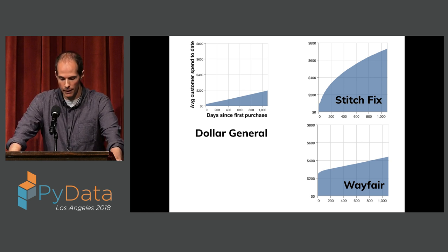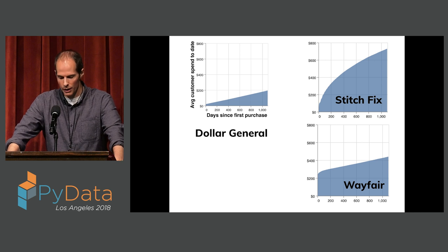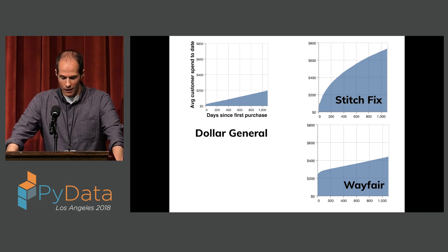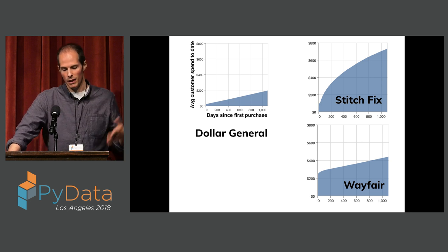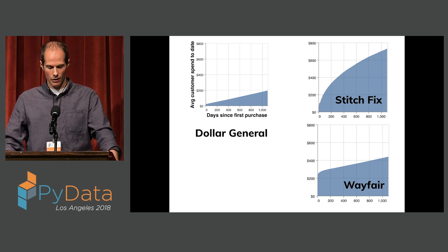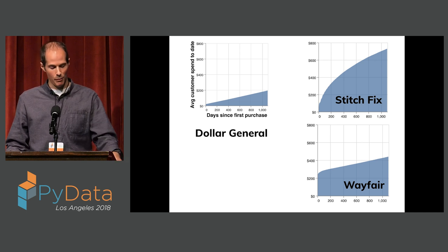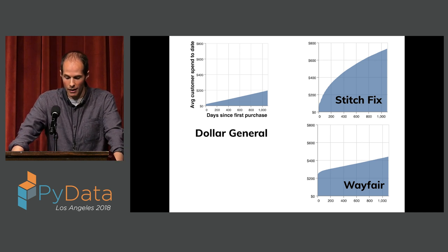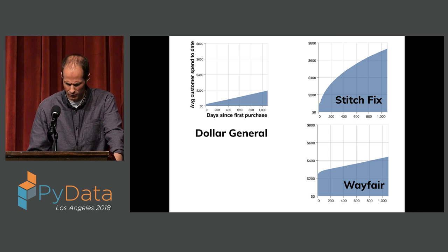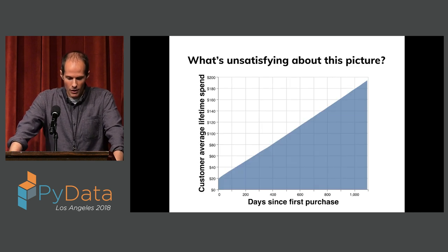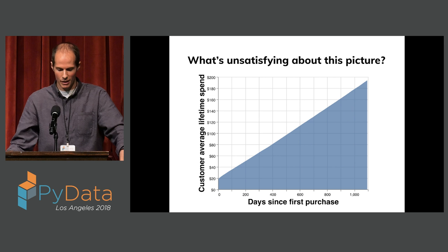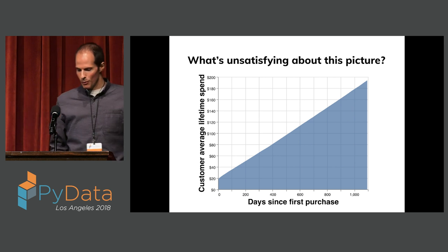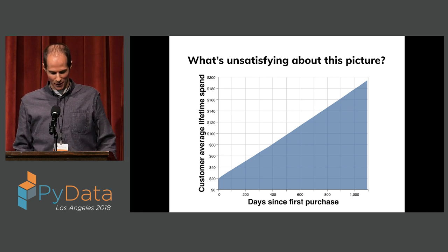Another example is Wayfair, an online furniture retailer. The interesting thing about Wayfair is that their lifetime spend is very front-loaded — people spend an average of $200 on their first day, and then you can see spend climbing up over time, which is actually kind of a problem for Wayfair. So this is lifetime spend — this is kind of what we want to reason about. The question is: why are we not done with this talk? What's unsatisfying about this picture?